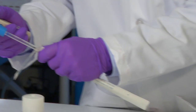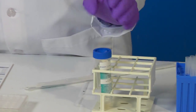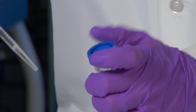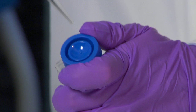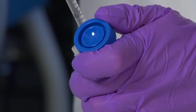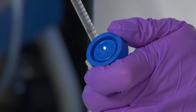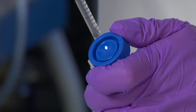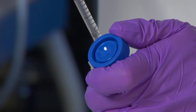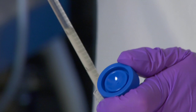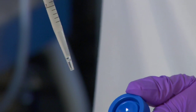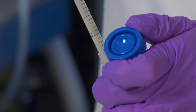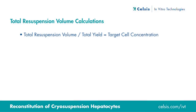Based on our selected assay and the plate configuration, our target cell concentration is 2×10⁶ cells per milliliter. The remaining 2 milliliters of original cell suspension must be brought up to the final resuspension volume in order to achieve this target cell concentration.